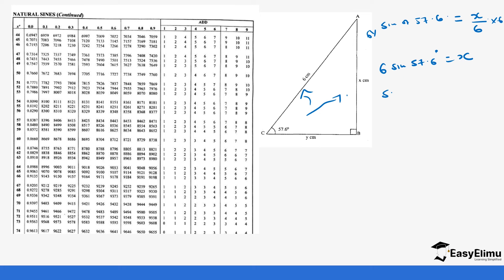We need to get the sine 57.6 from the table. Sine 57.6 is 0.8443. So 6 times 0.8443 equals 5.065 centimeters. You can round off if you have been told to, but always make sure you put your values before you round off so that you don't miss that mark.